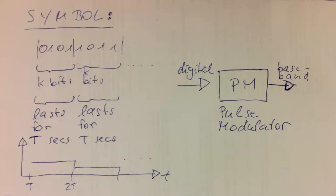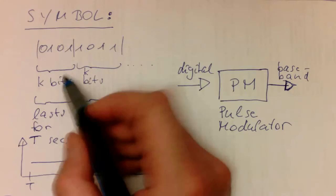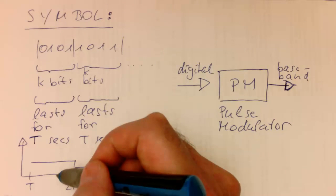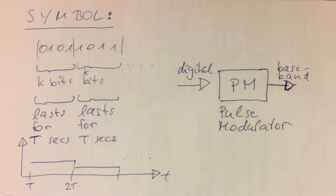So the characteristic thing is, the symbol lasts always for this period T here. And in this period, a certain chunk of k bits here is encoded. Obviously, in the simplest case, this could be just binary or more complex ones.